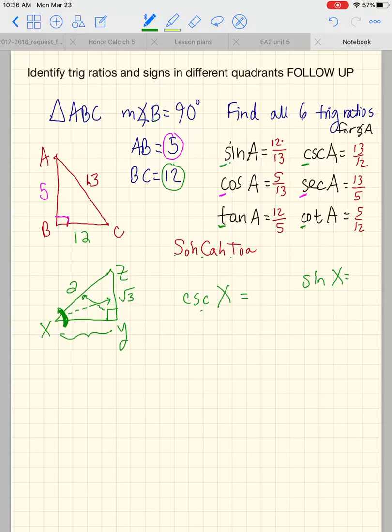So for angle x, we don't need the adjacent, because we're doing the reciprocal of sine. Now we know the sine would be opposite over hypotenuse. So cosecant would be the reciprocal of sine.